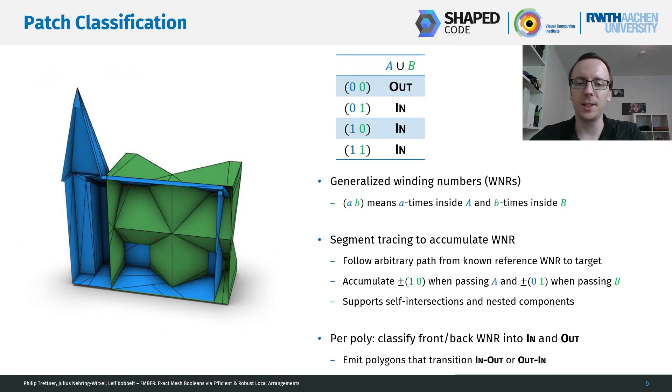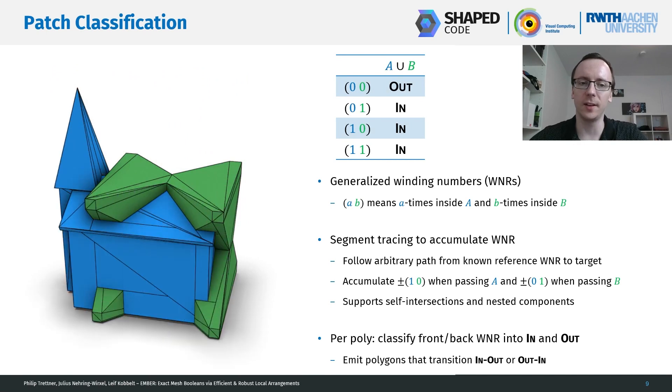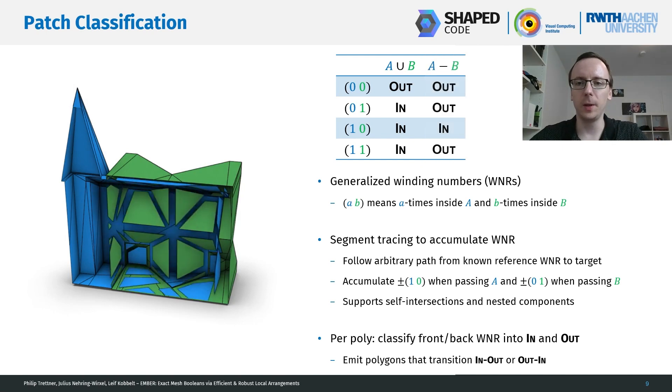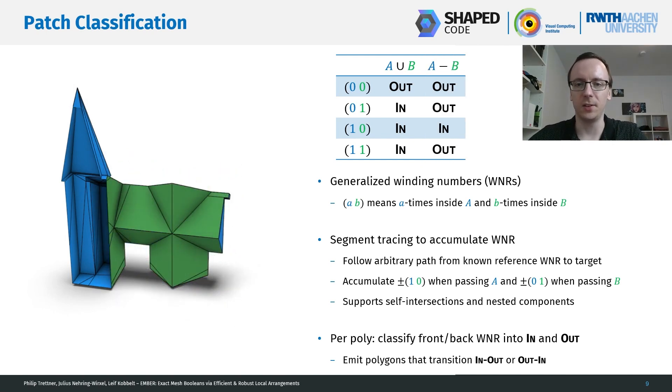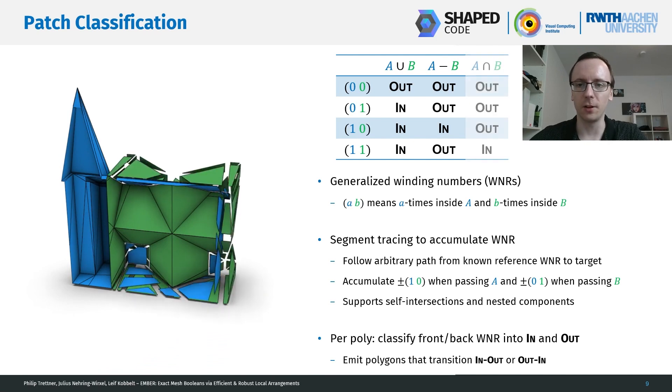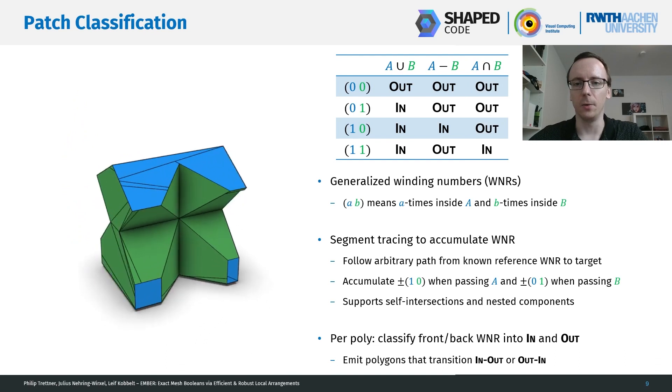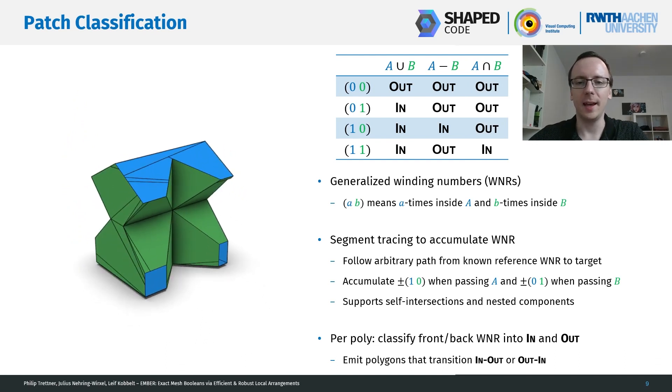For example, for a union operation, we only have (0, 0) considered out. Everything else is considered in. And the polygons that here transition in-out or out-in are exactly the borders of the union operation. And then we can just change up this table, for example, here for a difference operation or finally for an intersection operation. Here, only if we're inside A and B are we considered inside the output.